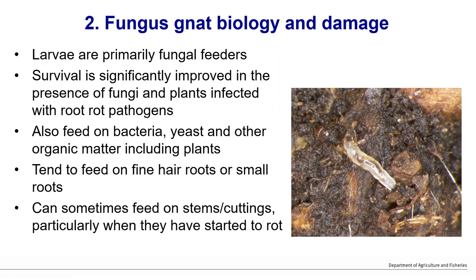As the name suggests, fungus gnats are primarily fungal feeders, which is partly why they are a major pest of the mushroom industry. They tend to feed on bacteria, yeasts, and dead decaying organic matter. Their survival is significantly improved in the presence of fungi. However, they will also feed on fine hair roots of plants and small roots, and in cases of massive infestation may feed up into rotting cutting tissue.